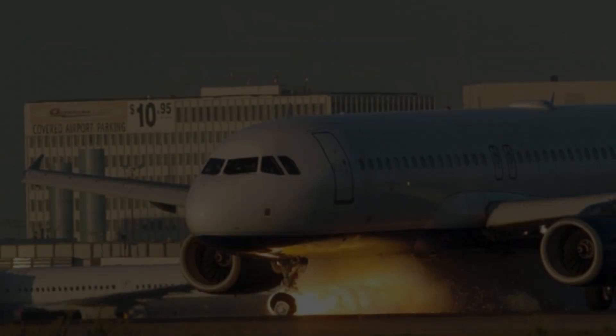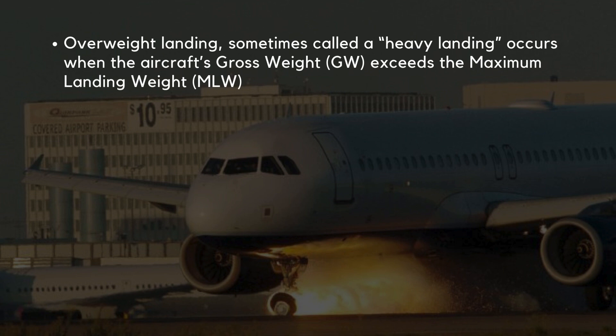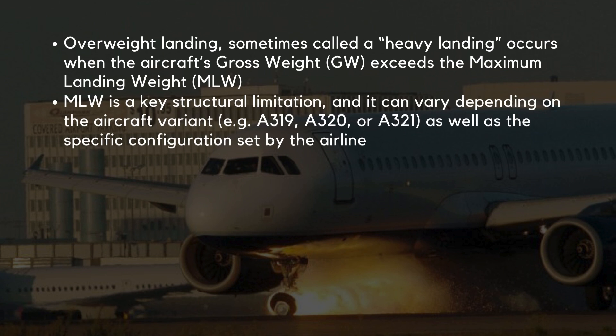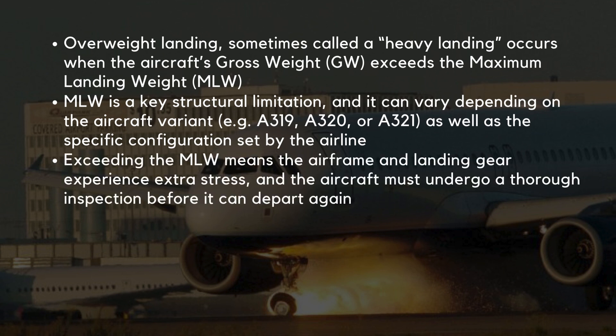An overweight landing, sometimes called a heavy landing, occurs when the aircraft's gross weight exceeds the maximum landing weight. The maximum landing weight is a key structural limitation and can vary depending on the aircraft variant — such as the A319, A320, or A321 — as well as the specific configuration set by the airline. Exceeding the maximum landing weight means the airframe and landing gear experience extra stress, and the aircraft must undergo a thorough inspection before it can depart again.